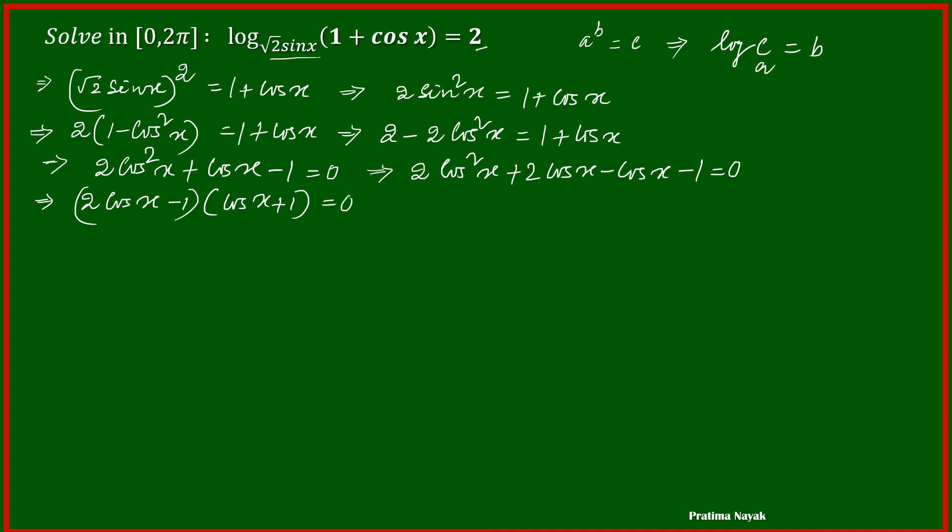I am getting two values of cos x. One is either 2 cos x is equal to 1, or cos x is equal to half. From the second factor, cos x is equal to minus 1.